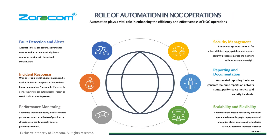Now we look at the roles of automation in NOC operations — the nitty-gritty of automation's impact on your network operation center. It is important to know that automating your NOC plays a vital role in enhancing efficiency and effectiveness. Key roles or areas of importance include fault detection and alerts, incident response, performance monitoring, security management, reporting and documentation, and scalability and flexibility.